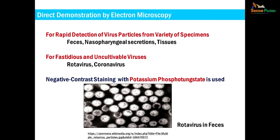Direct demonstration of virus can be achieved by different methods. Electron microscopy is a rapid method for detection of virus particles in specimens like feces, nasopharyngeal swabs, and tissues. It is especially useful for viruses that are difficult to cultivate, like rotaviruses and coronaviruses. The specimen is stained with negative contrast material like potassium phosphotungstate — the surrounding material gets stained with the electron-dense material and the virus morphology becomes clear.